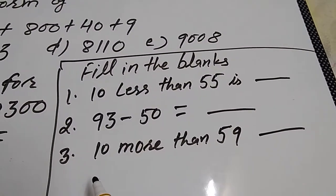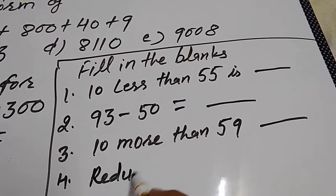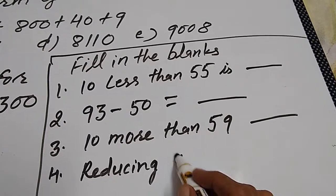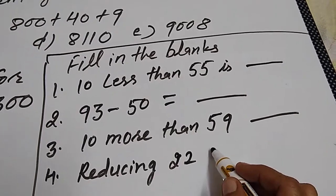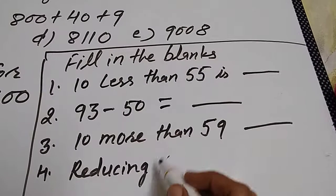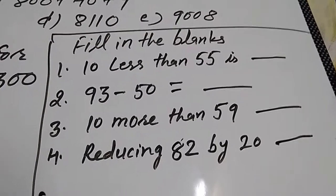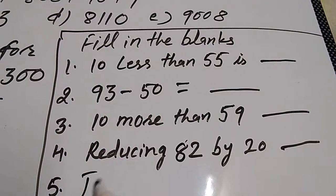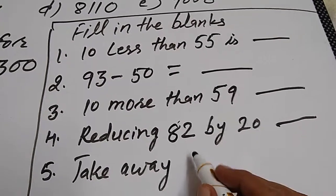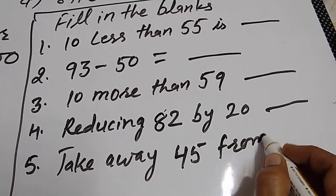Next is subtraction. 20 more than 40. Position 32 by 20. And one more: take away 45 from 100.